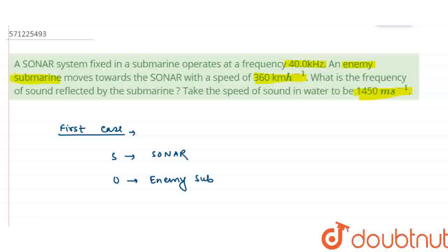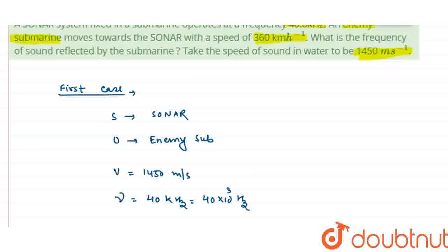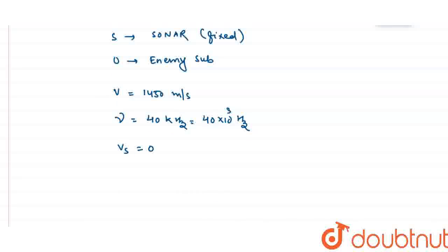V is given as speed of sound, 1450 m per second. Frequency is 40 kHz, which is 40 into 10 to the power 3 Hz. Speed of source, sonar is fixed, so Vs equals 0. V0 is the enemy submarine at 360 km per hour, changing into meter per second: 360 into 1000 divided by 3600, so V0 is 100 meter per second.